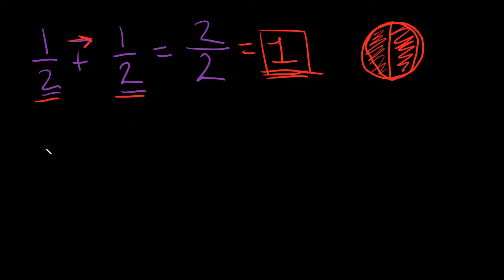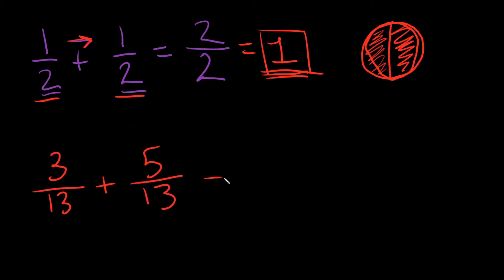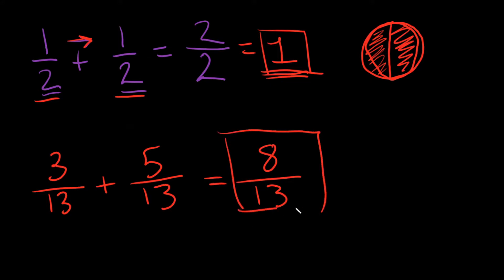So let's do another quick example. What if I had 3 over 13 plus 5 over 13? Again, you're going to keep the denominator. They both have 13, so we're just going to put 13 right there. So then what's 3 plus 5? That's just 8. Is this as reduced as possible? Yes — 8 over 13.